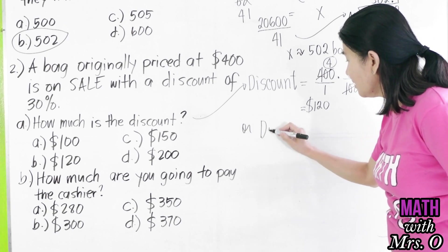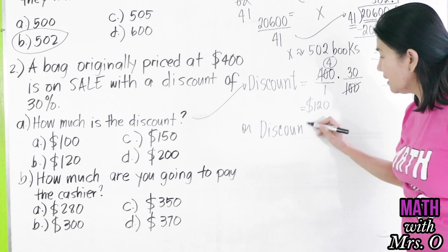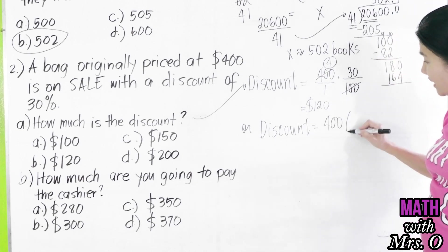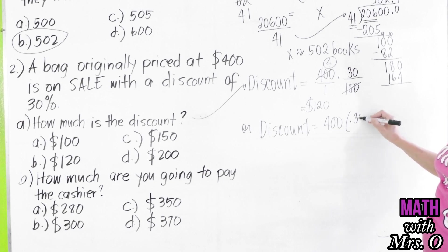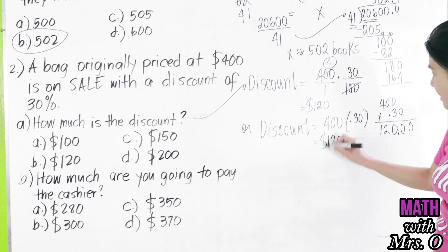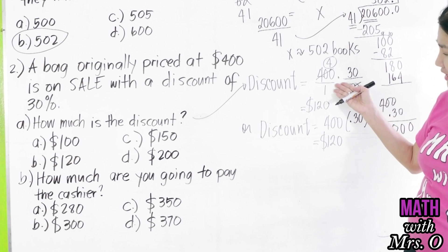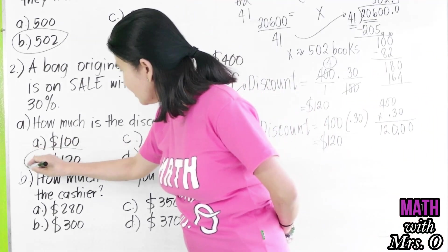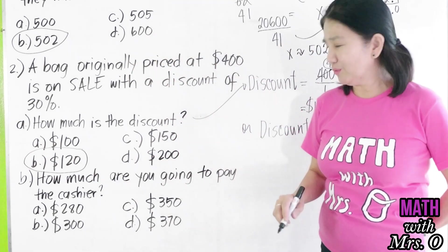the discount using decimal is equal to 400 times 30% means 30 per 100 or 0.30. Multiply this to 400 times 0.30. We have here 1, 2, 3. 1, 2, 3. 4 times 3 is 12. 1, 2, 0.1, 2, 0. So, you also get $120. So, you can use fraction or decimal. So, our final answer here is letter B, $120.